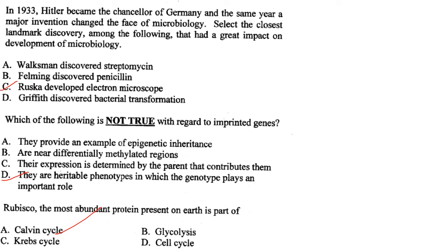Which of the following is not true with regard to imprinted genes? They provide an example of epigenetic inheritance, have differentially methylated regions, and their expression is determined by the parent that contributes them — all correct. However, the statement that they are heritable phenotypes in which the genotype plays an important role is wrong about imprinted genes. Answer is option D.